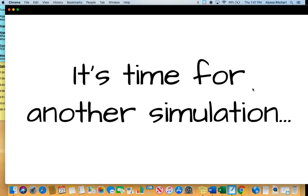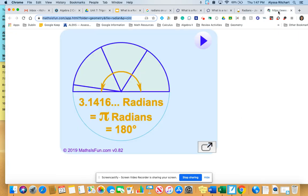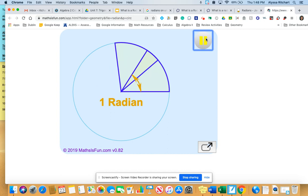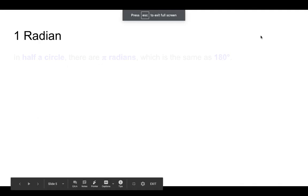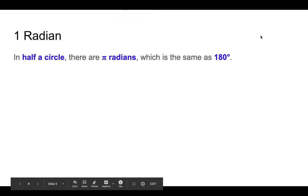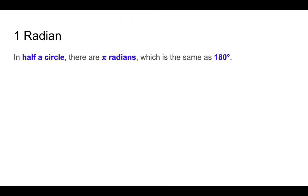It's time for another simulation. So we have one radian, two radians, three radians and a little bit. 3.1416 radians, which again we talked about as pi radians or 180 degrees. So in a half a circle, there are pi radians, which we talked about the same as 180 degrees.